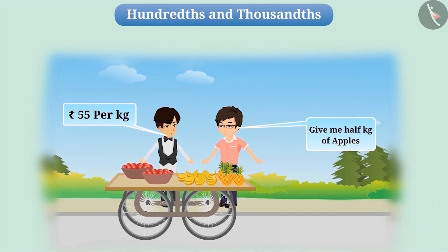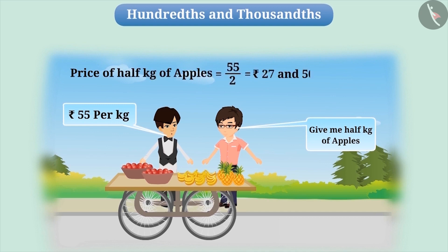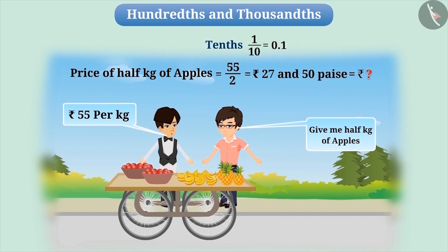Think for a while. Since Rahul is buying half a kg of apples, he has to pay half the price for 1 kg — that is, 27 rupees and 50 paise. How do we express this in rupees? To express this in rupees, you need to know about tenths, hundredths and thousandths.